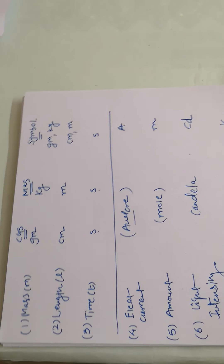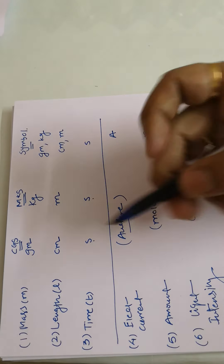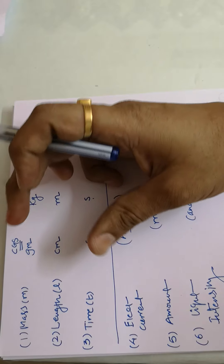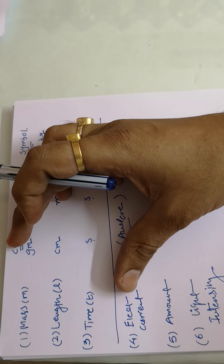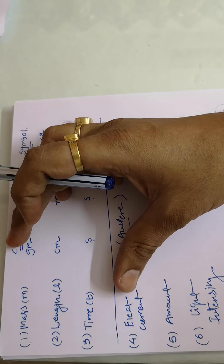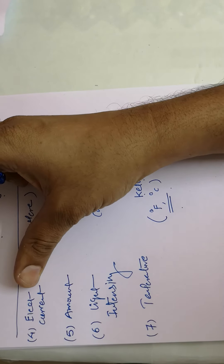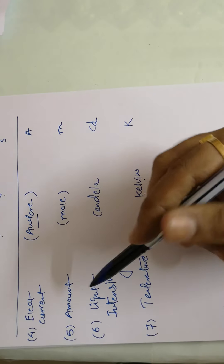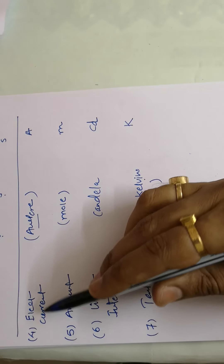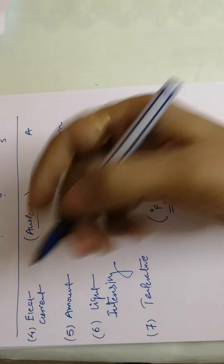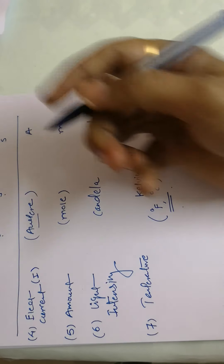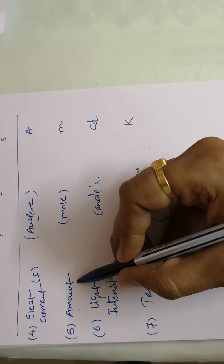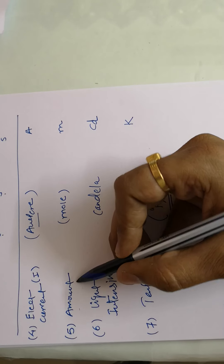In the SI system, mass, length, and time are the three fundamental units discussed previously. After the SI association — you can say MKSA — four more units were added: electric current, amount of substance, light intensity, and temperature.